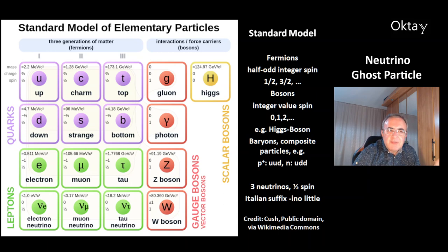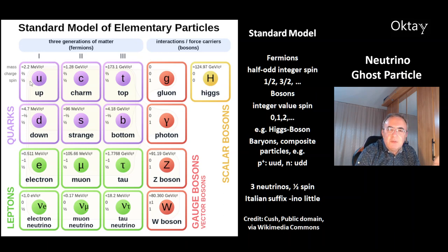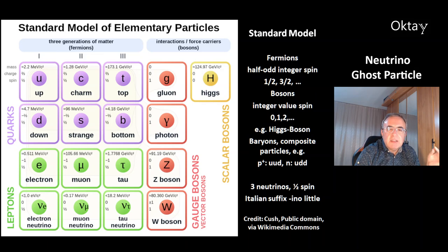And the baryons, these are composite particles. For example, the proton is a combination of two up quarks with two plus two-thirds charge each and one down quark. The neutron is a composite particle of one up quark and two down quarks.